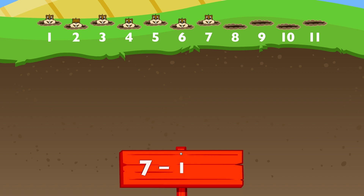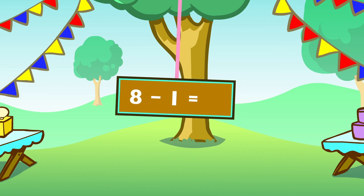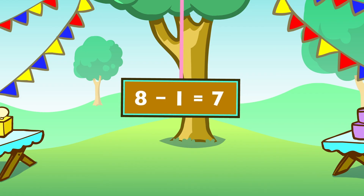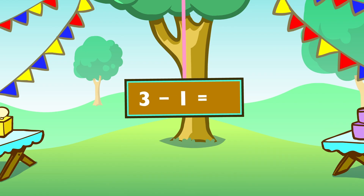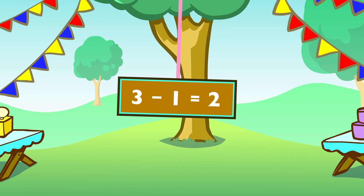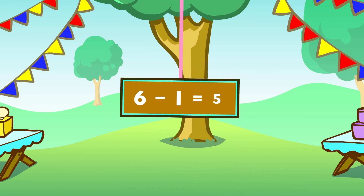Seven minus one equals six. Four minus one equals three. Three minus one equals two. Six minus one equals five.